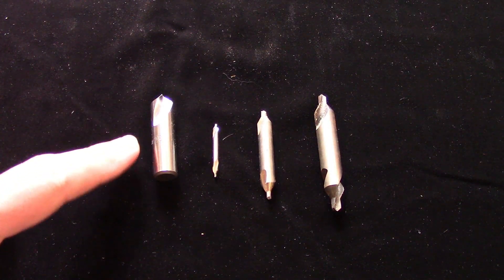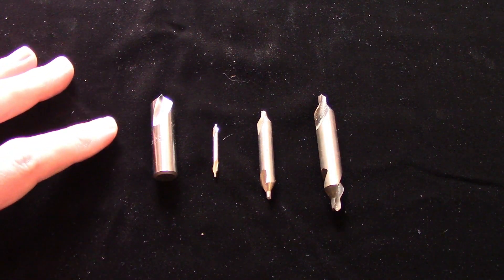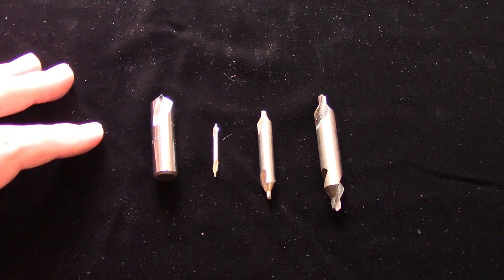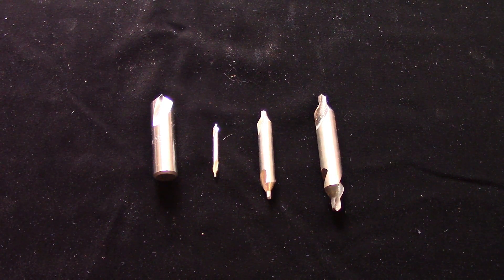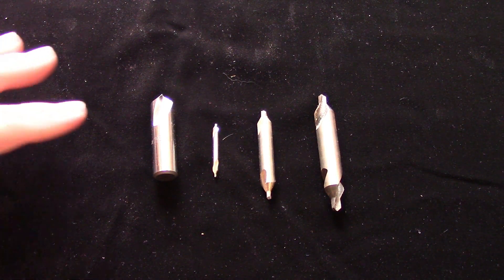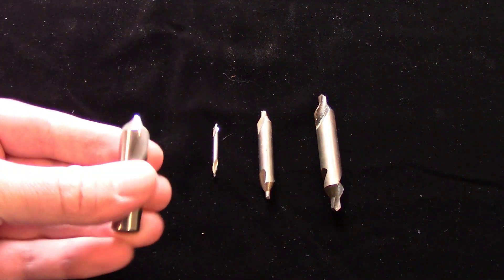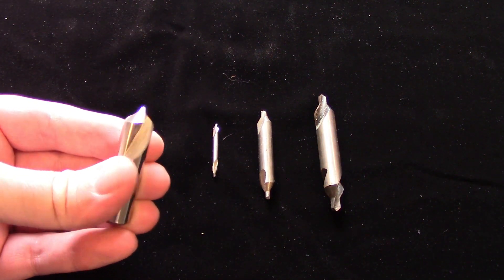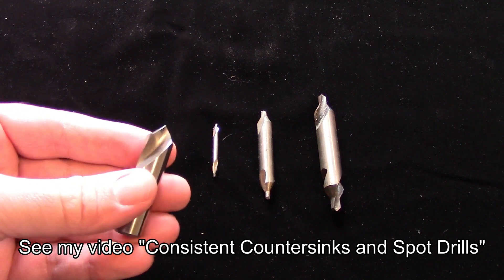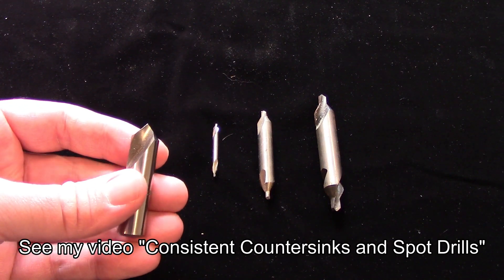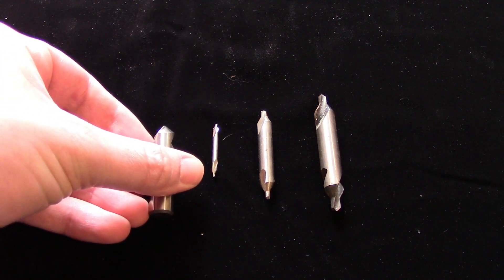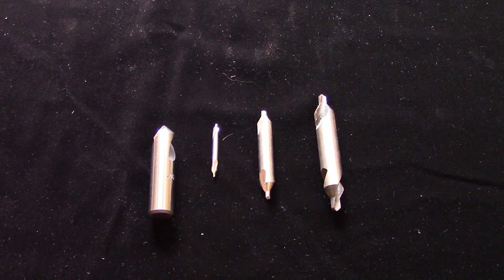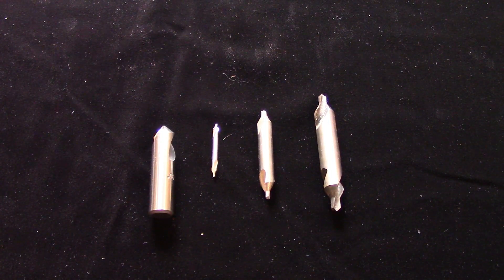Spot drills are usually short with a minimum of flute length so they don't flex. Although there are a variety of styles available, so it's difficult to generalize their shape. They are also available with many tip angles, but the most common is 90 degrees. This is useful because you can spot the hole deep enough that a chamfer is created before the finished hole is even drilled. This technique can eliminate a tool change and is especially useful when drilling and tapping holes.